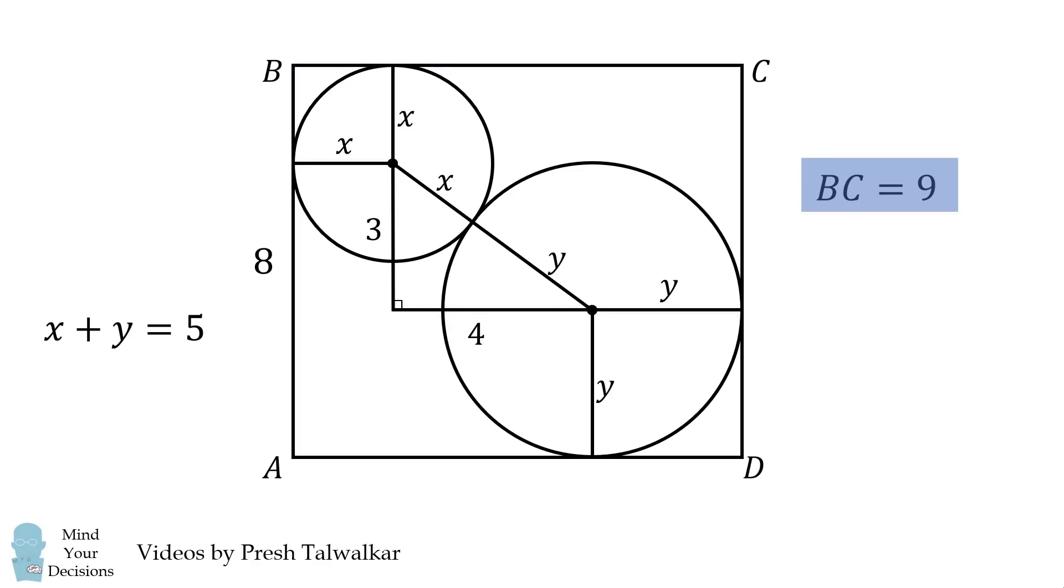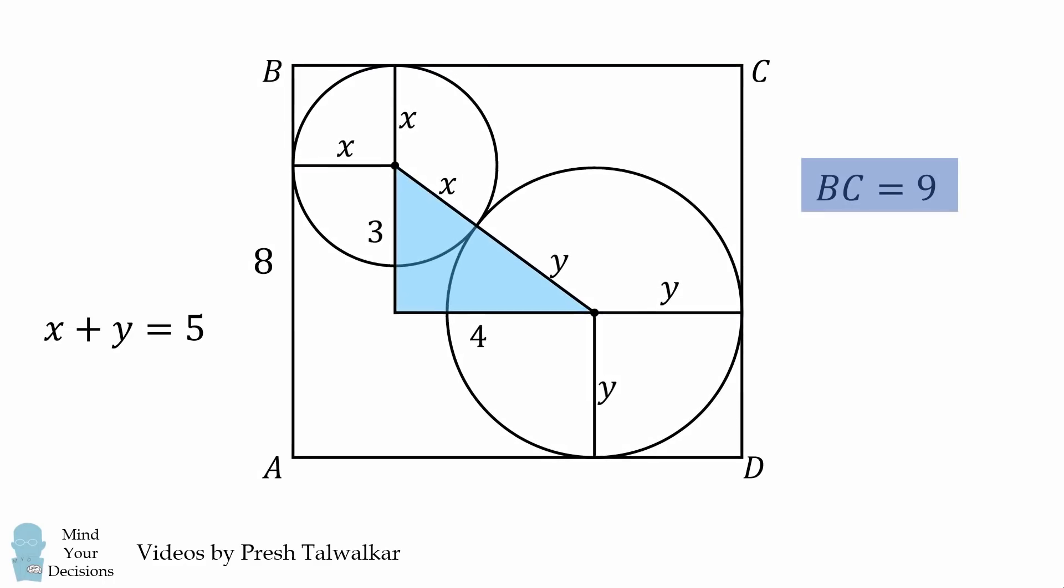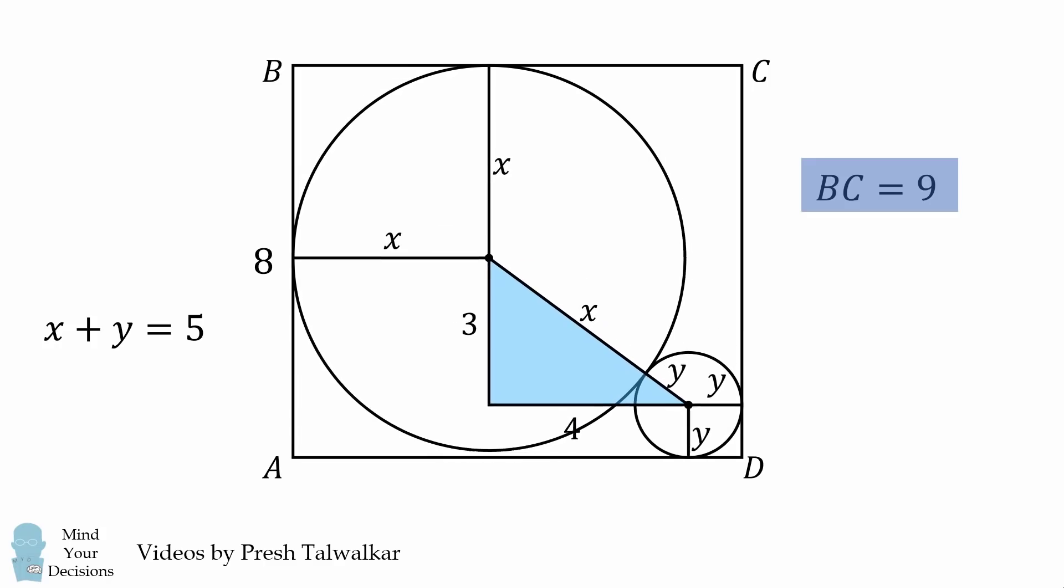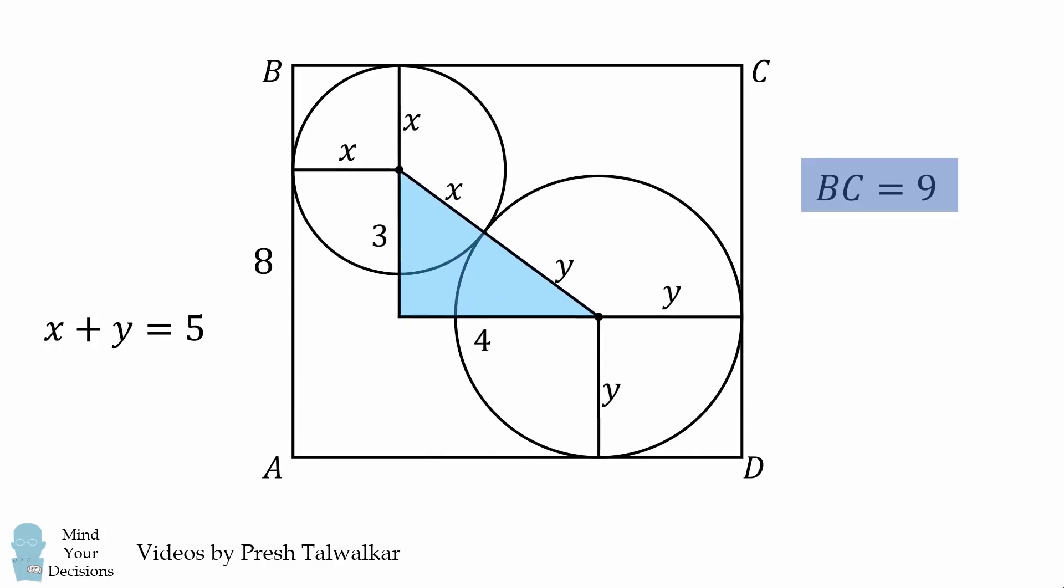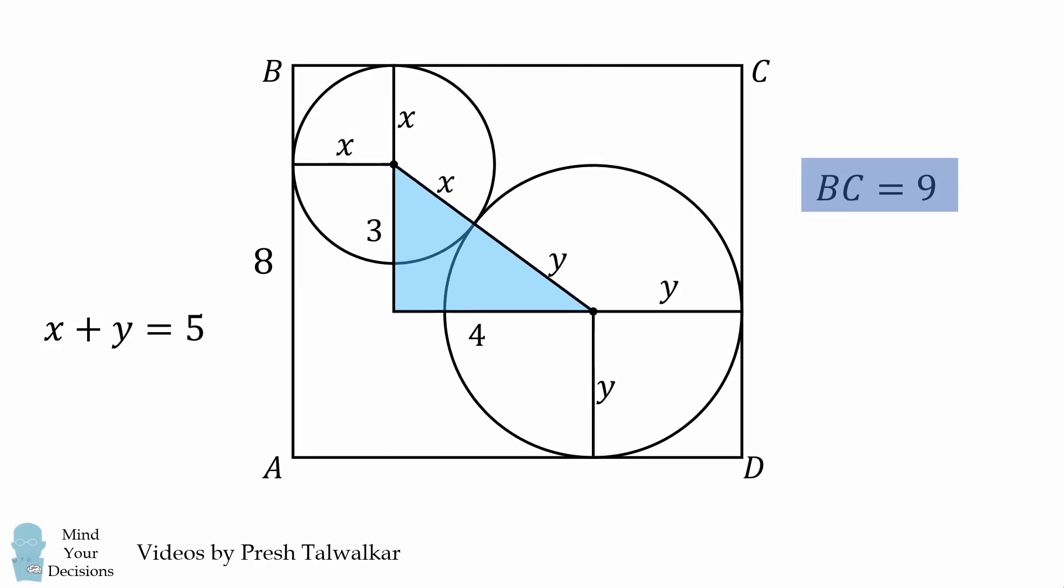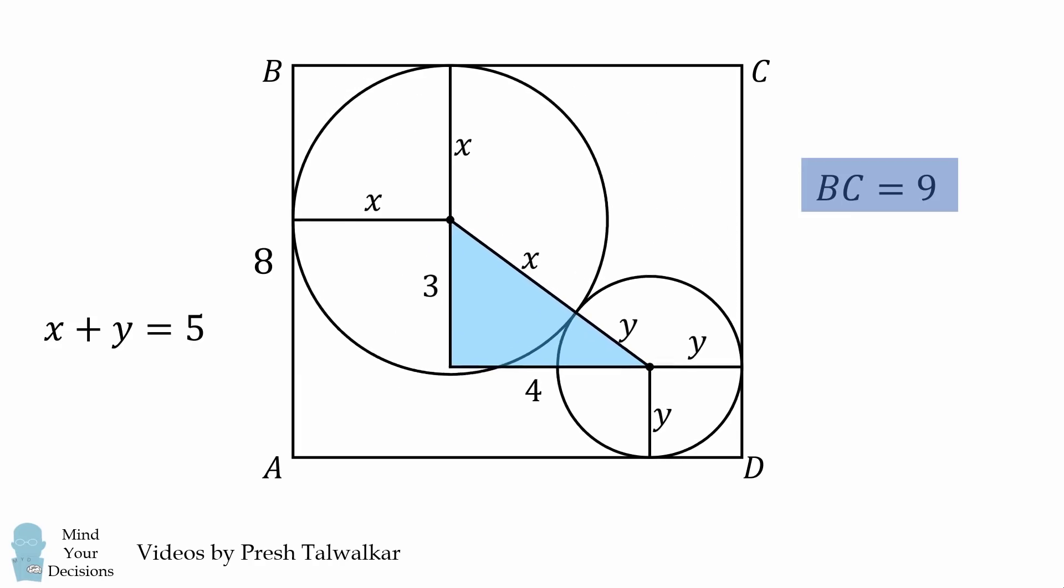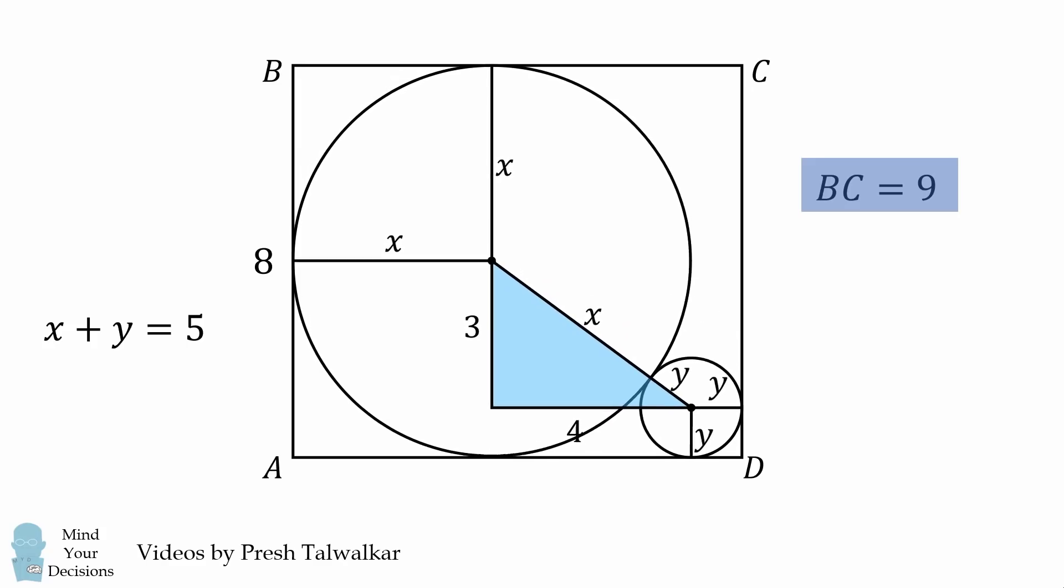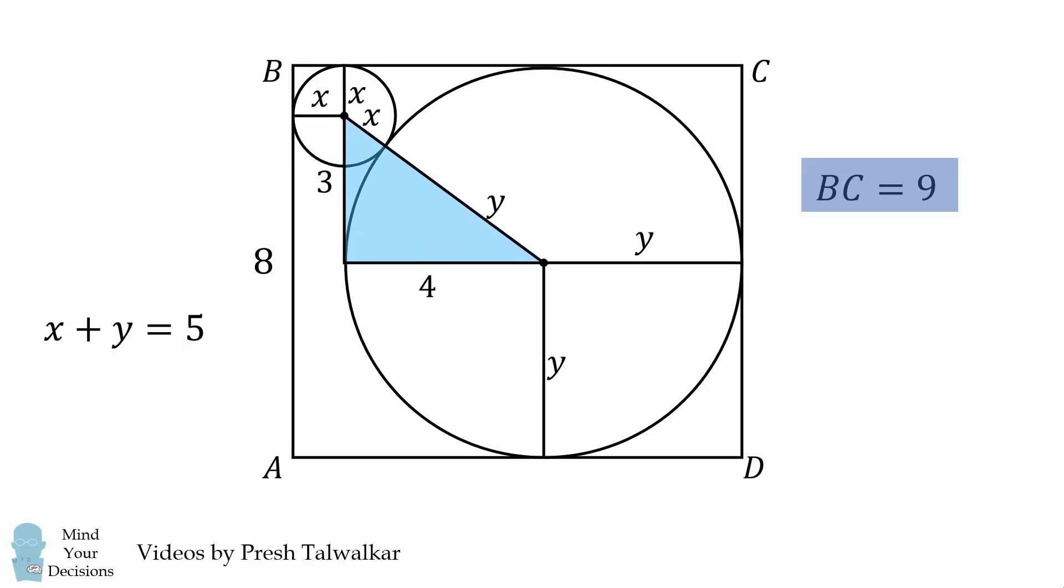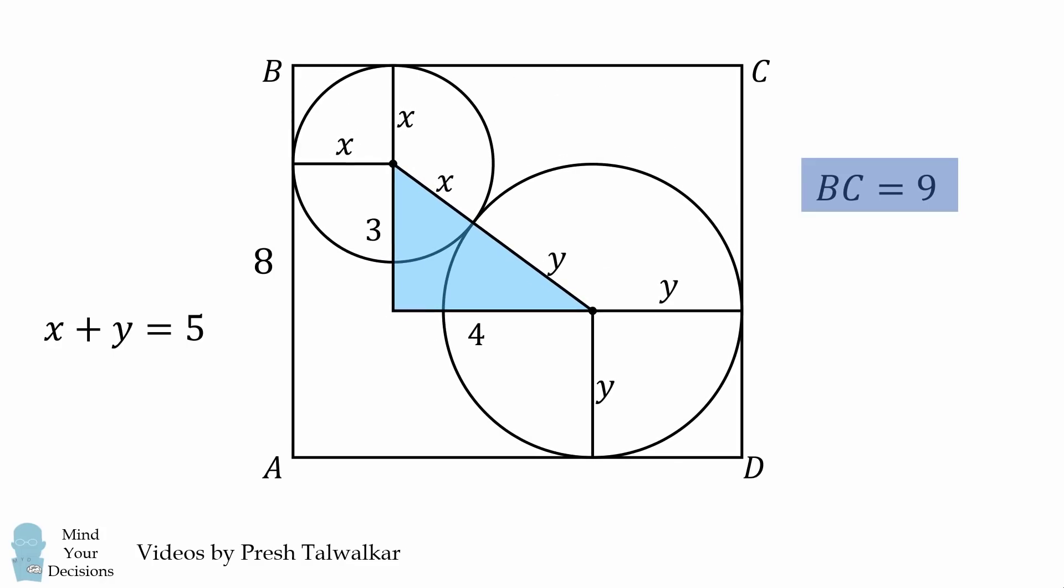What's remarkable is that this is always our answer. Because we have a 3-4-5 right triangle that goes between the two centers of the two circles, this exactly determines that BC will always be equal to 9. I find it fascinating that this ancient Egyptian 3-4-5 right triangle is the key to solving this problem. Incredible!